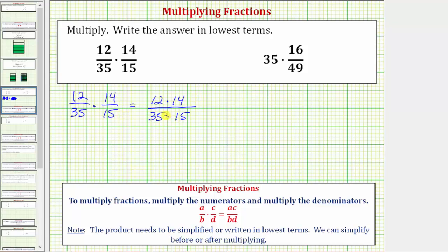But because we want our answer in lowest terms, before we find these products, we want to simplify out all the common factors between the numerator and the denominator. One way to make sure we find all the common factors would be to find the prime factorization of these factors. Let's show it this way, and then we'll also show a second method.